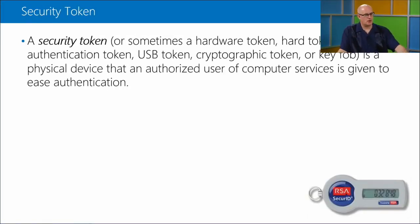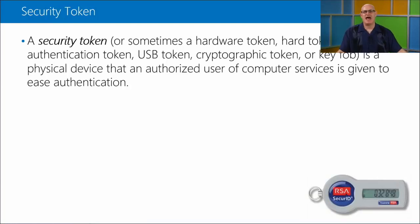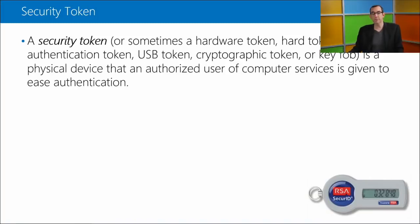A security token or hardware token is a little fob that has a unique password or numeric combination in it. As you go to access the system, it prompts you, and this code changes periodically - every five seconds, every minute, every hour, depending on the system. These are synchronized: it knows what your account is, so when prompted for the password, you look at the token and type in the number at that time. At a different date and time, that number can be totally different.